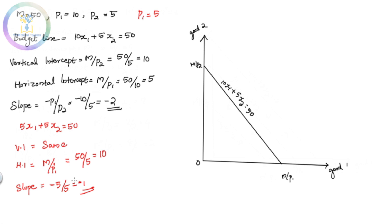The slope was minus 2, and now it is minus 1. The slope changes. The horizontal intercept was 5 and now it increases to 10. There is no change in the vertical intercept, because only P1 is going to change.